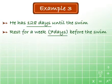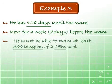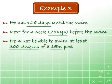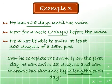He believes that in order to complete the mile-long swim, he must be able to swim at least 300 lengths of a 15-meter pool. Will he be able to complete the swim if, on his first day, he can swim 18 lengths and can increase his distance by two lengths each day?